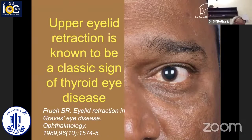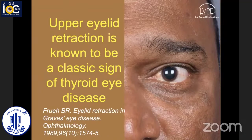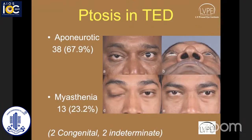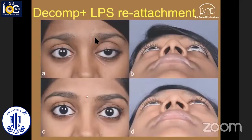Talking about ptosis — it's always been upper eyelid retraction that has stolen the thunder in diagnosing thyroid eye disease, but we do see many patients who present with ptosis. Although our first reflex would be to diagnose myasthenia, we find that two-thirds of these patients are aponeurotic, and it's more common in fat disease than muscle disease. Perhaps the fat acts like increased orbital pressure, tending to detach the levator from the tarsus. Here is a case with mild proptosis along with levator disinsertion where a combined surgery was performed.